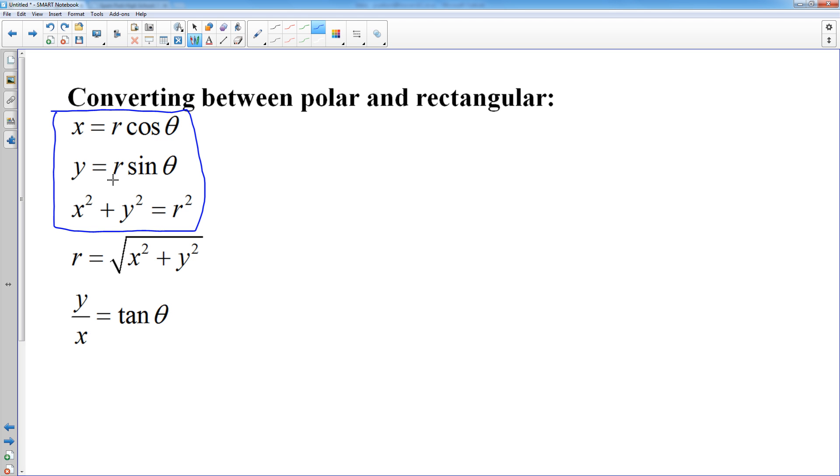X squared plus y squared equals r squared. It's really just a play on the Pythagorean theorem. Those are the three big ones. If you can remember those three, these two on the bottom are just offshoots of those.